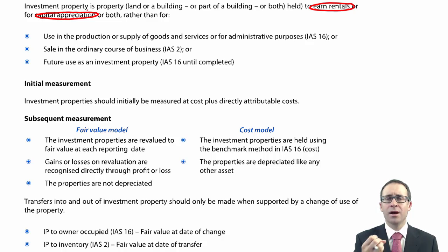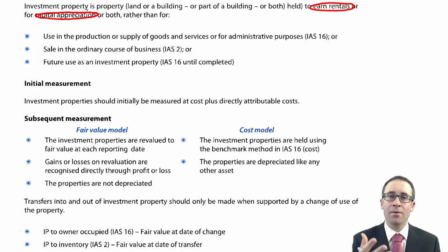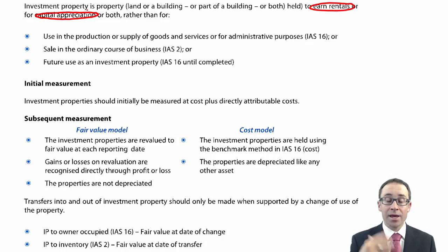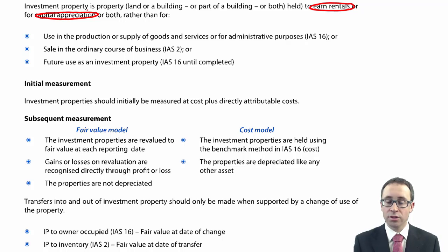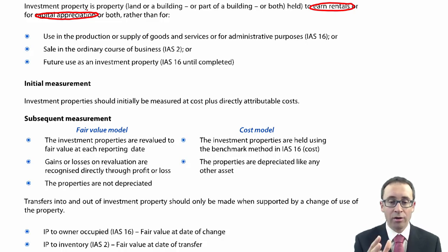Investment property could be an office building, or land that you rent out to somebody else, or land you bought with the aim of getting a gain on disposal — the fancy term being capital appreciation. The key point is that it is not used in the production or supply of goods and services, or for administrative purposes — essentially you are not using it as your own head office.